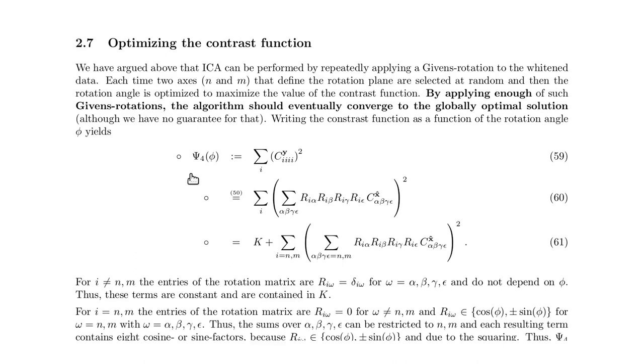The contrast function now reads like this. We sum over all the auto-cumulants of the rotated data, so y indicates the rotated data while x-hat indicates the whitened data.